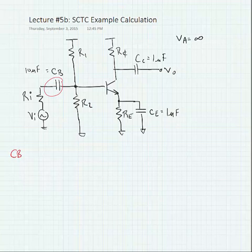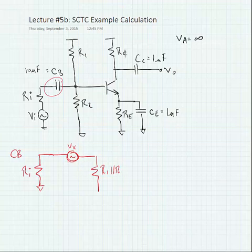And so, we'll start with CB. So, the equivalent circuit for CB is drawn as follows. We're going to short all of our independent voltage sources. We're going to replace CB with a test voltage source, Vx. And when we're done, we have the following circuit left over.